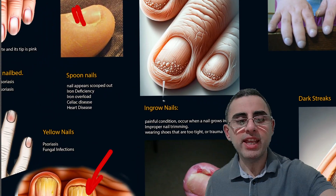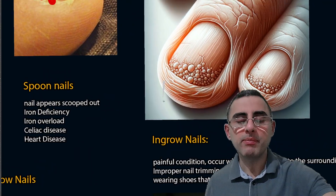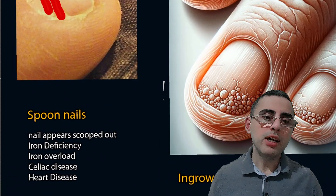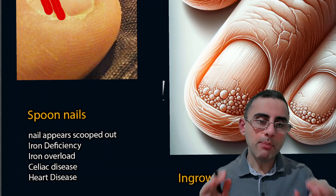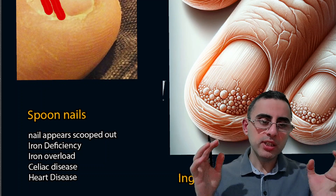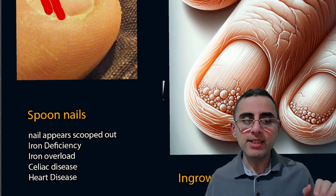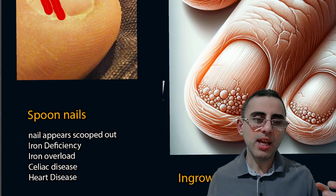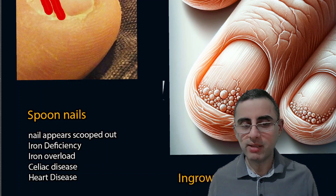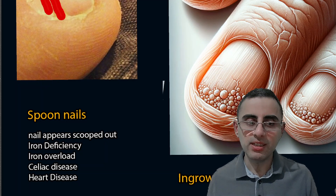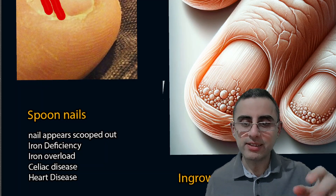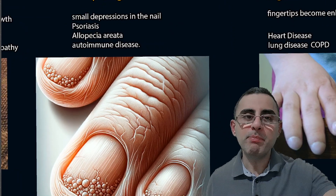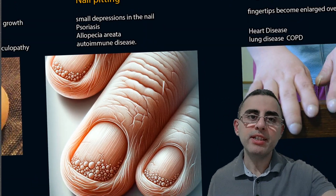Spoon nails occur when nails appear scooped out. This usually indicates iron deficiency, or sometimes iron overload, celiac disease, or heart disease.